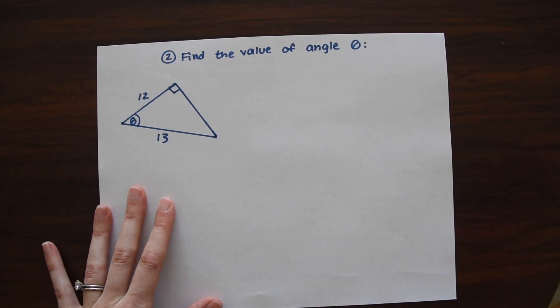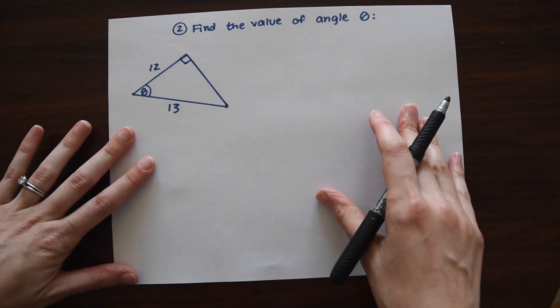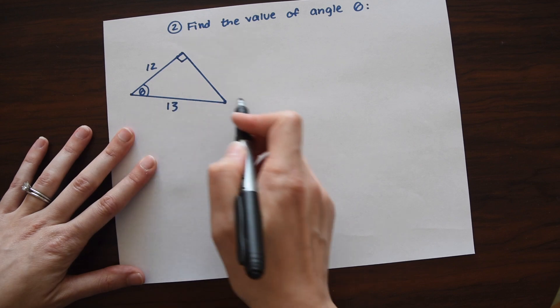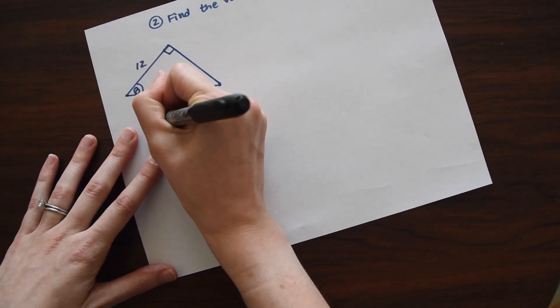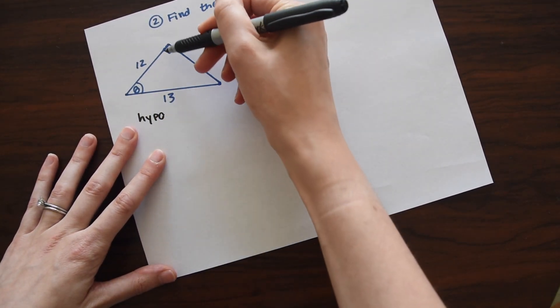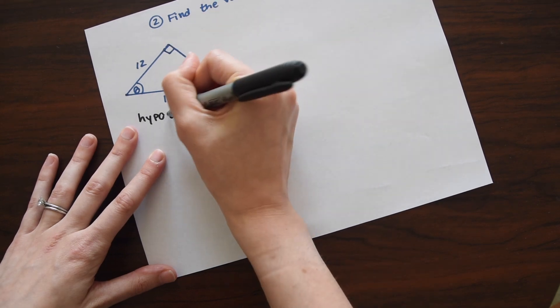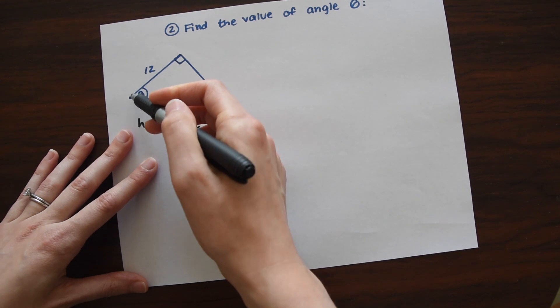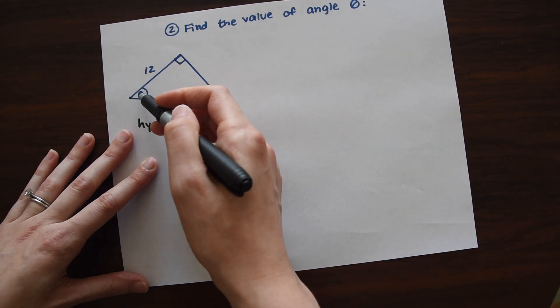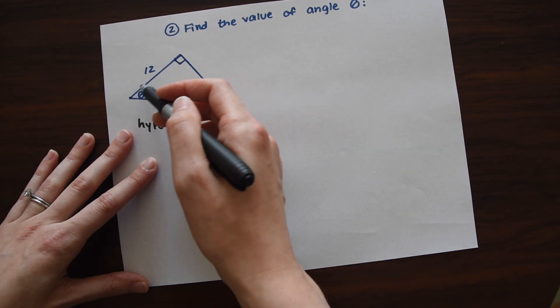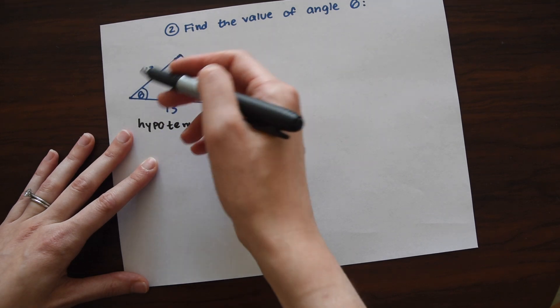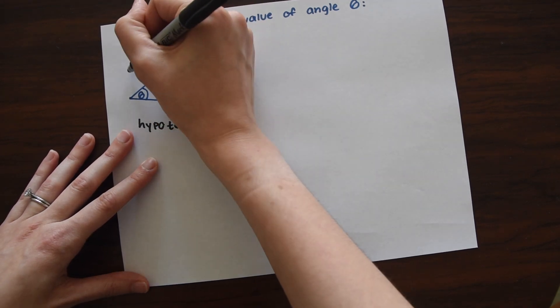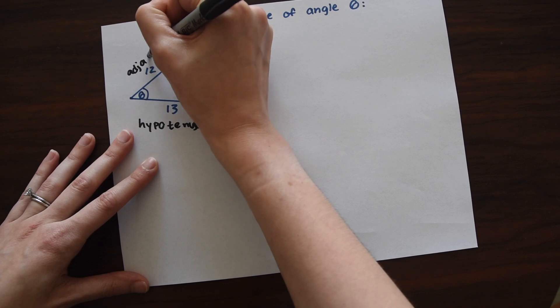So before we begin, let's start with labeling our triangle first. So we have our longest side. This is our hypotenuse. And the longest side is always just opposite that 90 degree angle—hypotenuse. And then if you notice, we're looking over here, the theta is over here. So then we have the side that is right next to the angle. So next to, so we're going to go and write adjacent over here.